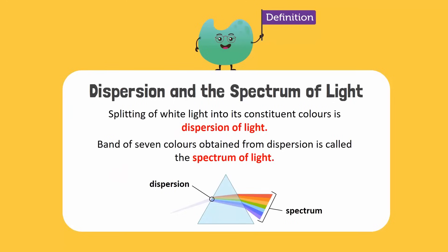The splitting and bending of white light into its constituent colors is called dispersion of light. And the band of seven colors obtained from this dispersion is called the spectrum of light.